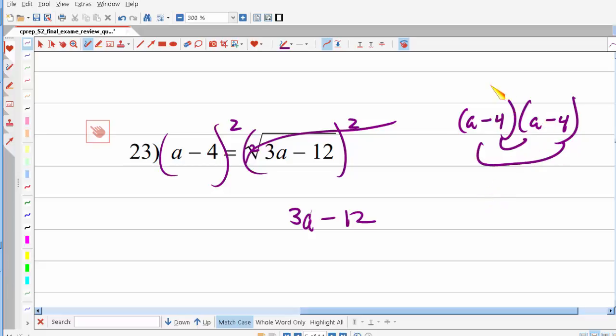I'm gonna have to square it. I'm gonna do first, outer, inner, last. A squared minus 8a plus 16. So I get a squared minus 8a plus 16.